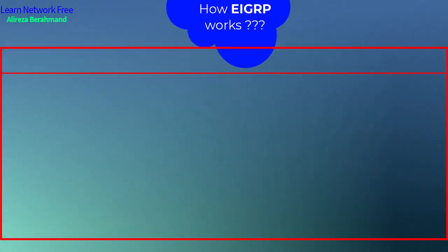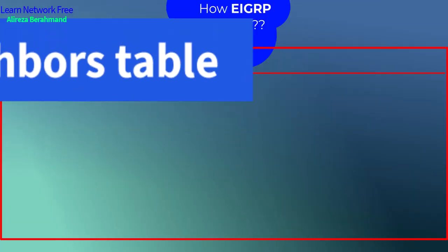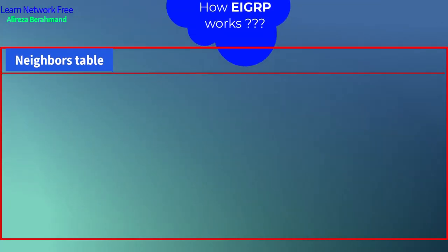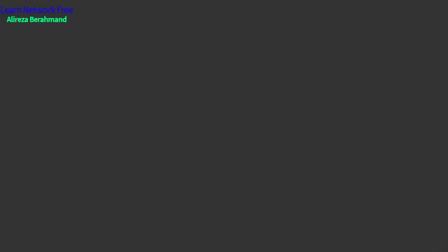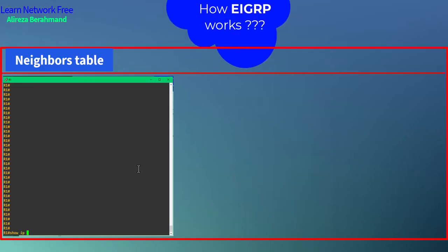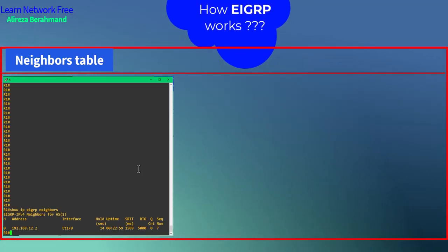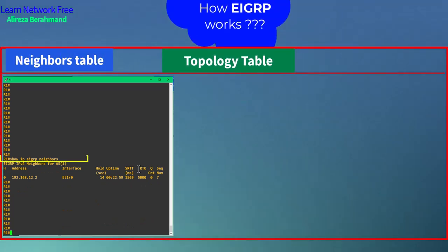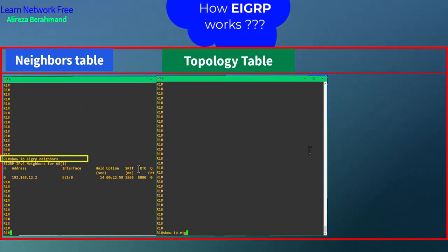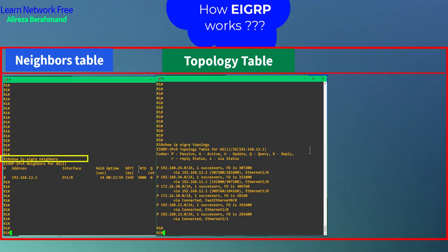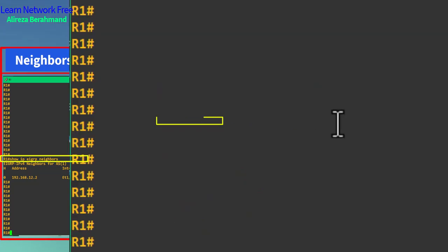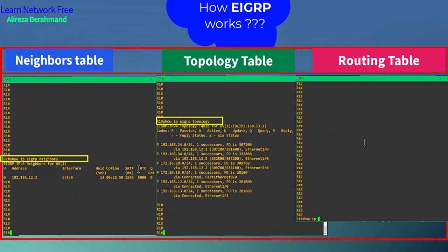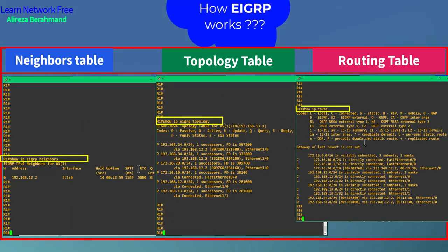How does EIGRP work? EIGRP uses three tables for its operation: the neighbor table, which stores information about directly connected routers; the topology table, which contains routes to all destinations shared by neighbors; and the routing table, which holds the best routes to all destinations.